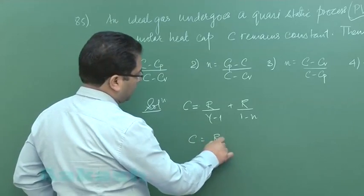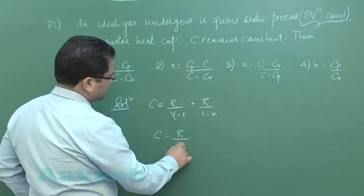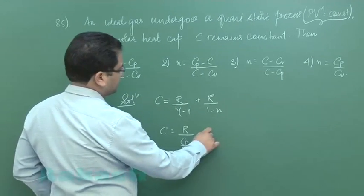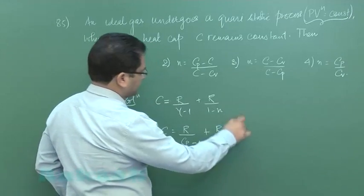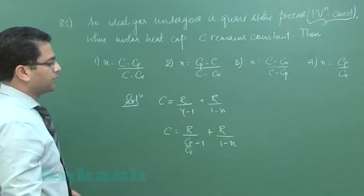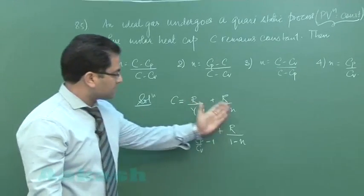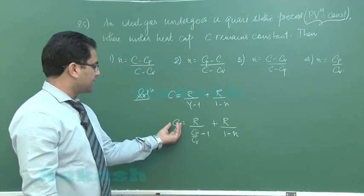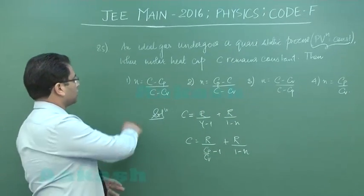Now here comes the question: C is R by gamma minus 1. The gamma can be written as Cp by Cv minus 1 plus R divided by 1 minus n. This is the value of C, and from this we can easily calculate the value of n. It's all simple—you keep this here, bring it here, and from this you calculate the value of n.